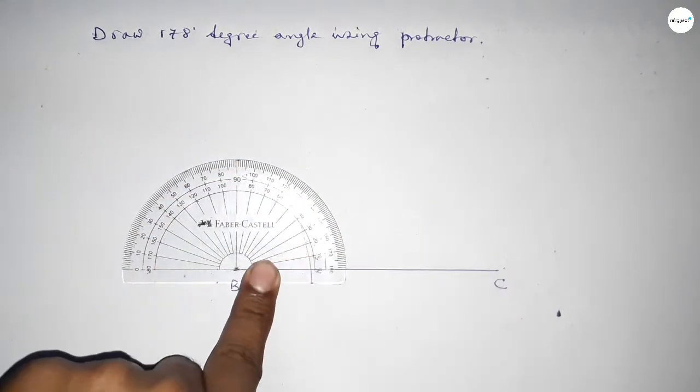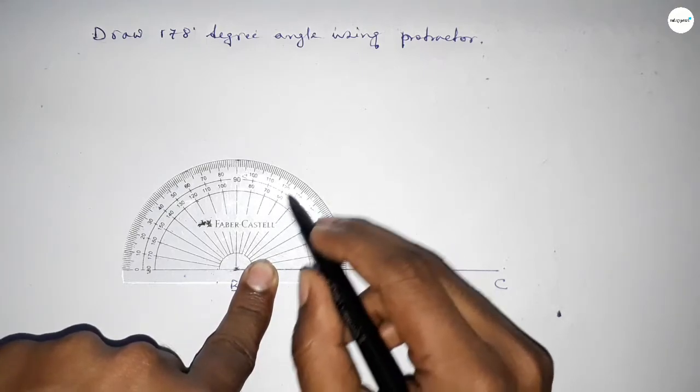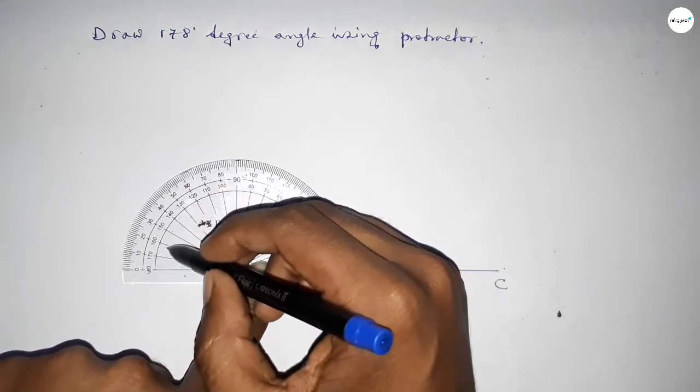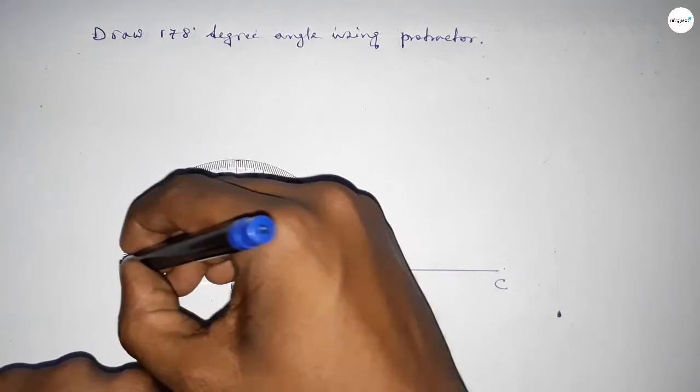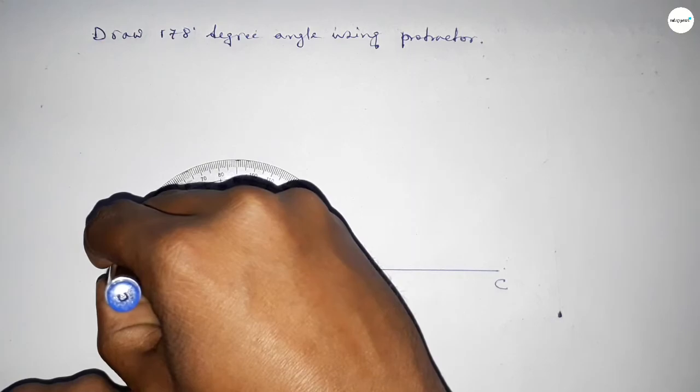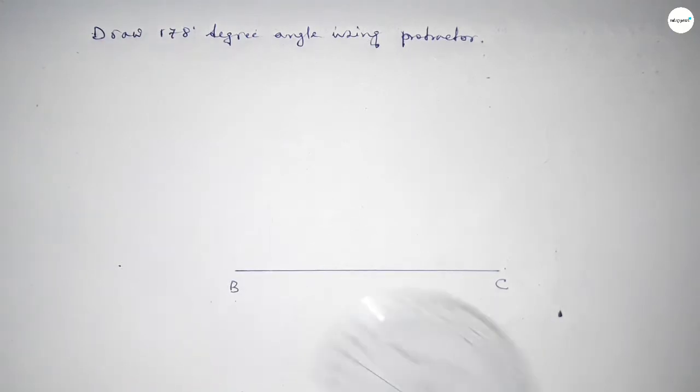Then counting the angles. This is starting: 0, 10, 20, 30, 40, 50, 60, 70, 80, 90, 100, 110, 120, 130, 140, 150, 160, 170, 175, 176, 177, 178. So this is 178 degrees.